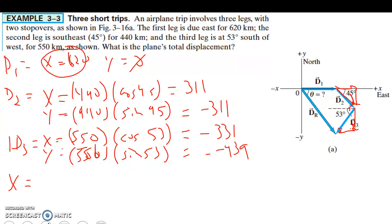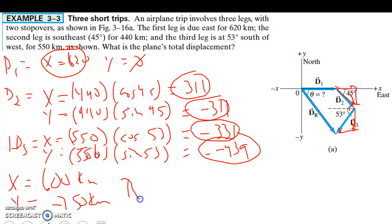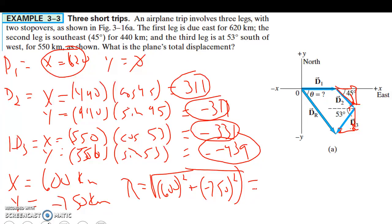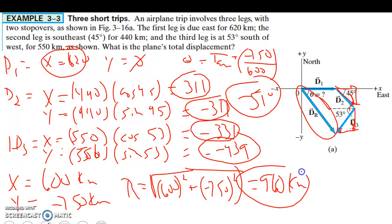Adding all components: total x equals 620 plus 311 minus 331 equals 600 kilometers. Total y equals 0 minus 311 minus 439 equals negative 750 kilometers. Using the Pythagorean theorem: square root of 600 squared plus 750 squared gives a resultant of 960 kilometers. For the angle: inverse tangent of negative 750 over 600 gives negative 51 degrees. So the final displacement is 960 kilometers at negative 51 degrees.